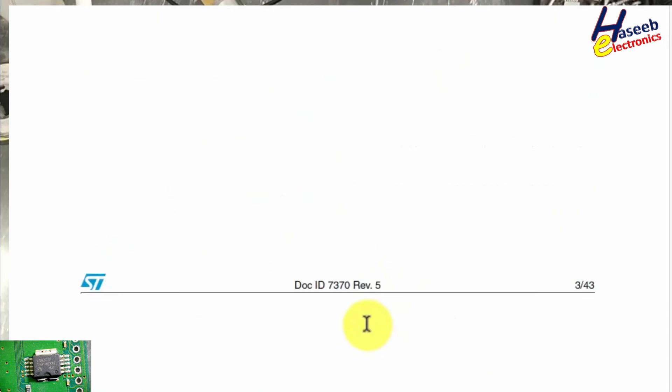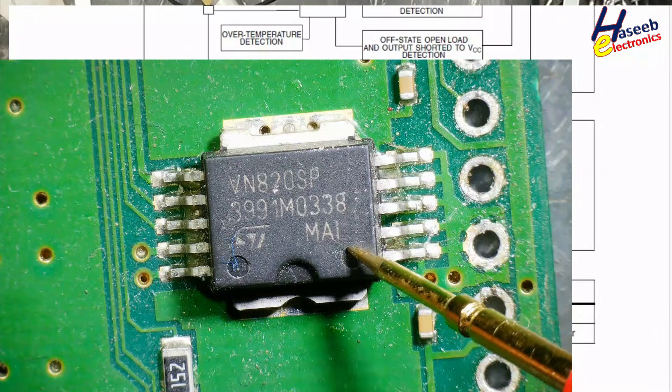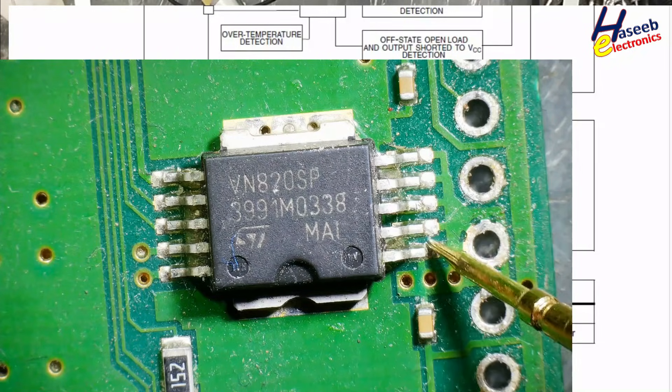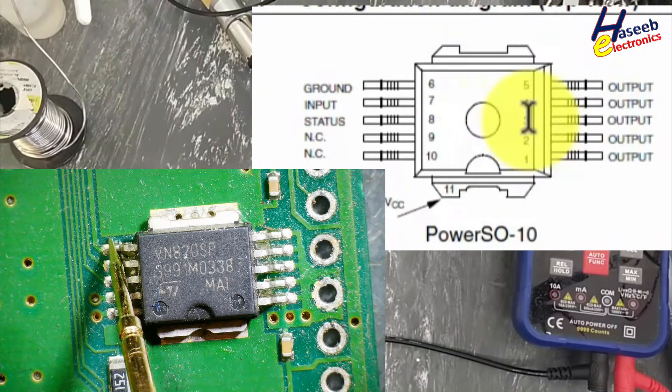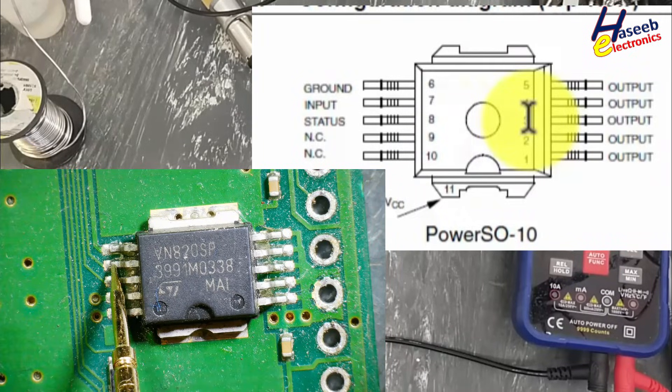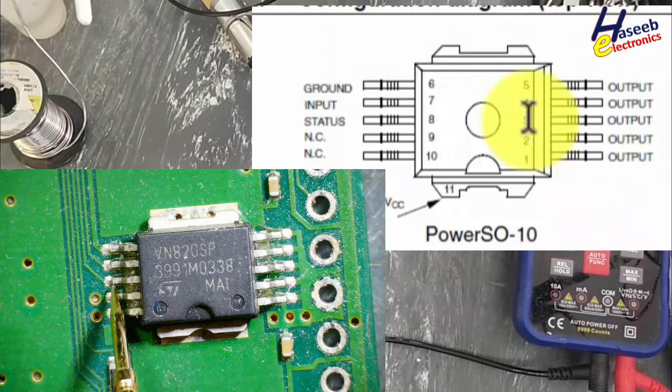If we see its pinout, pin 1, 2, 3, 4, 5 with index mark. Pin numbers 1, 2, 3, 4, 5 are outputs. Pin 6 is ground, chip ground. This is signal input and this is status output.